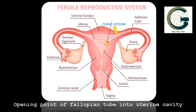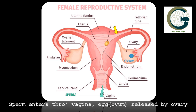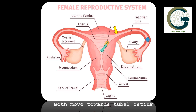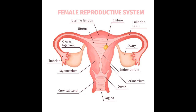The two fallopian tubes open into the interior of the uterine cavity through openings known as the tubal osteum. The sperm enters through the vagina, shown by the green arrow, and the ovum or egg is released by the ovary, marked in blue. The ovum then travels through the fallopian tube, finding its way to the tubal osteum, where the ovum and the sperm meet each other and a pregnancy starts forming.